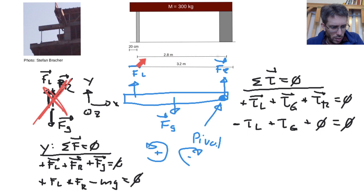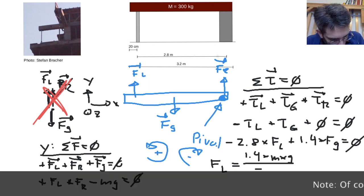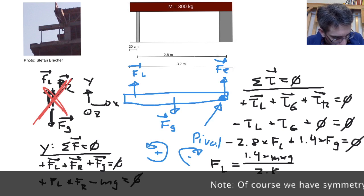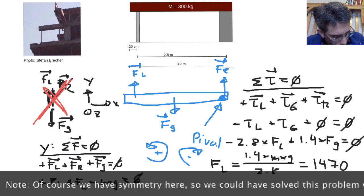I know my left support is acting at 2.8 meters distance. So, I have minus 2.8 times the force on the left, plus my gravity is acting halfway in the middle of the beam. So, 1.4 times Fg must be zero. Then I can solve for my left force. So, my left force is 1.4 times M times G, divided by 2.8, which gives me 1470 N.